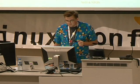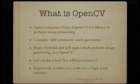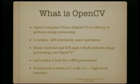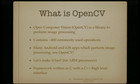What is OpenCV? Open Computer Vision is an open source library to perform image processing. It contains about 400 commonly used image processing functions, mostly used in computer vision. Many Android and iOS apps perform image processing using OpenCV, so let's make it fast for ARM processors. It's a framework written in C with a C++ high-level interface.